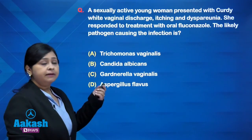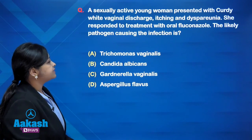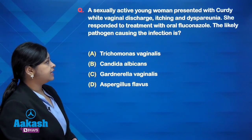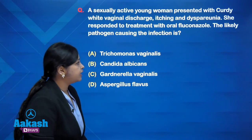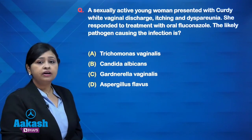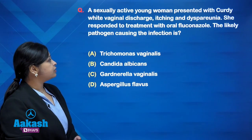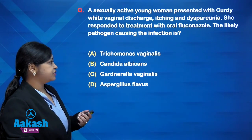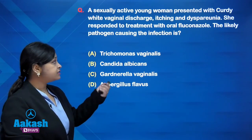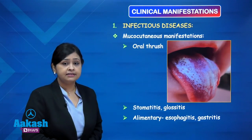Here is an AIMS question: A sexually active young woman presented with curdy white vaginal discharge, itching, and dyspareunia. She responded to treatment with oral fluconazole. What is the likely pathogen causing the infection? We will discuss the answer once we cover the clinical manifestations of Candidiasis.